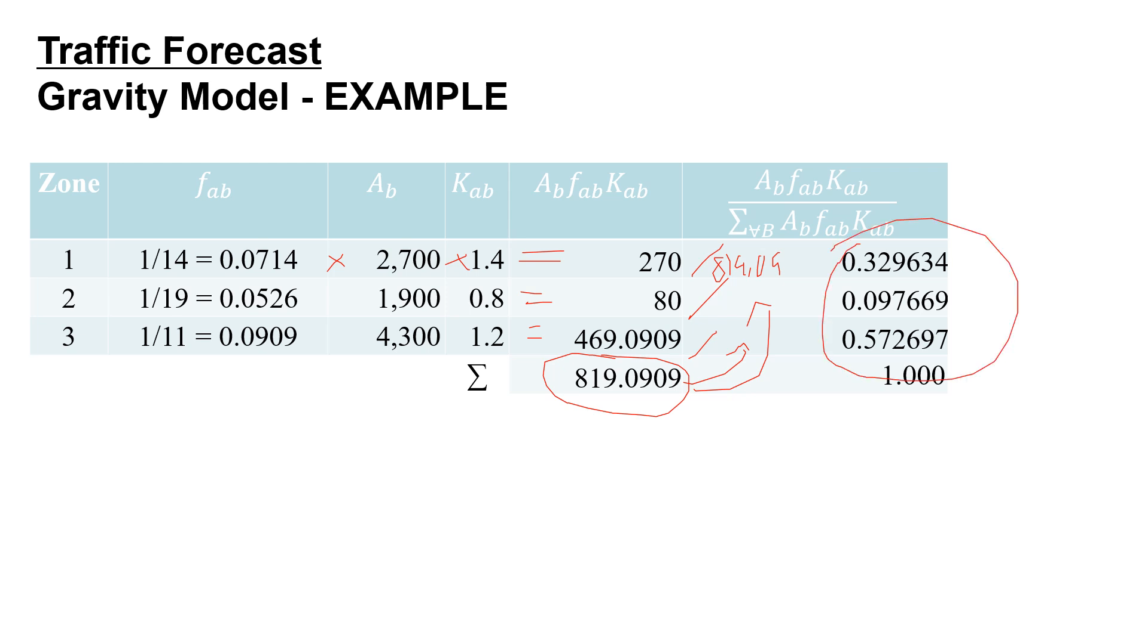So we're going to end up with 32.9 percent from zone 1 to the office park, 9.7 percent from zone 2, and 57.2 percent from zone 3. That's going to sum up to 100 percent.